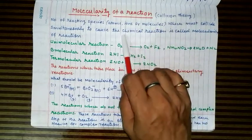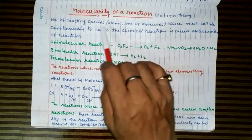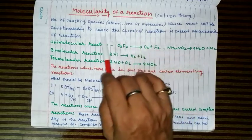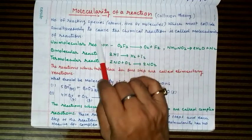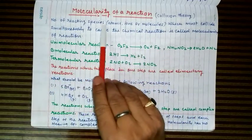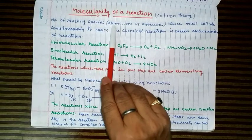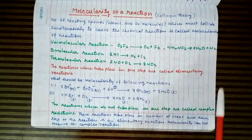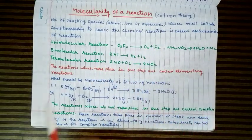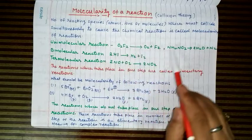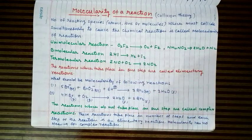According to collision theory, molecularity of a reaction can be defined as the number of reacting species — atoms, ions, or molecules — which must collide simultaneously to cause the chemical reaction.